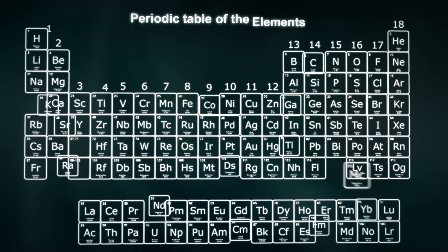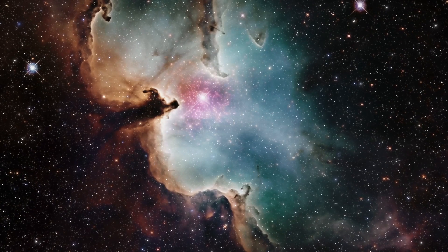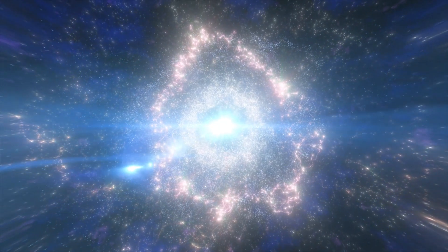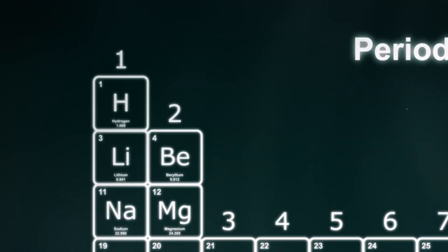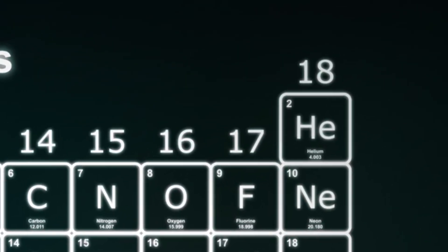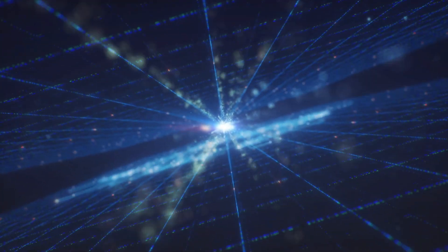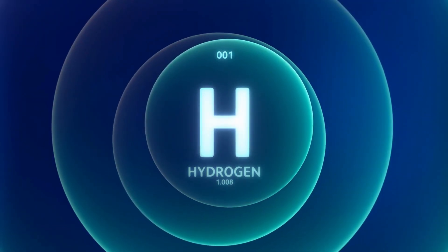When you pay attention to the periodic table, right at the very top you have two elements: number one and number two. These two are the most common elements in the universe, so they were the very first elements that appeared after the Big Bang. They're also very simple and light. Number one is hydrogen, which we've made a video on, and right across the table you have number two — helium — which this video is about.